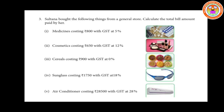Now let us move on to problem number 3. Sultana bought the following things from a general store — calculate the total bill amount paid by her. You have to find the total amount paid by her along with the GST: medicine costing Rs.800 with GST at 5%, cosmetics costing Rs.650 with GST at 12%, cereals costing Rs.900 with GST at 0%, sunglasses costing Rs.1,750 with GST at 18%, and air conditioner costing Rs.28,500 with GST at 28%.